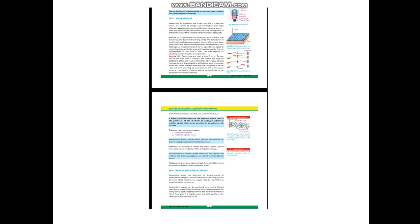Ab aate hain iske examples — jaise water wave hai, aur wave of rope: jaise ek rassi ki wave hoti hai, ya string ki wave hoti hai — jaise string ko hum jhatka dein to usme jo wave produce hogi, vo transverse wave hogi.